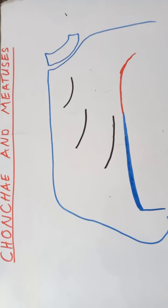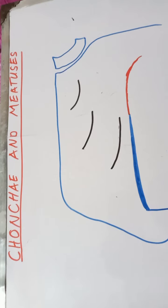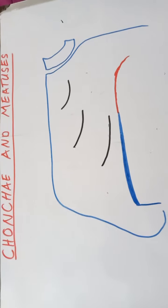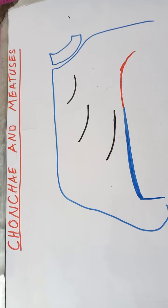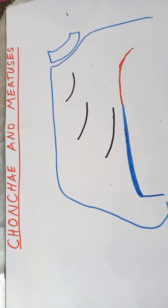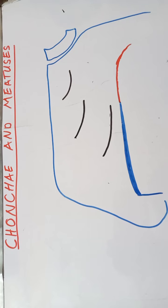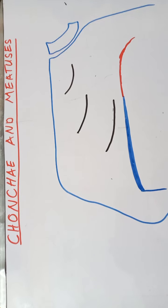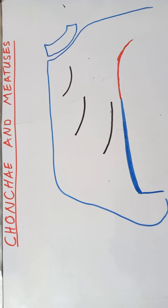Today we will talk about the conchae and meatuses of the nose. Conchae are present at the lateral wall of the nose. We will first talk about what structures are present in the lateral wall, then where the sinuses of the nose open at the lateral wall, and finally the arterial and nervous supply of the nasal cavity.